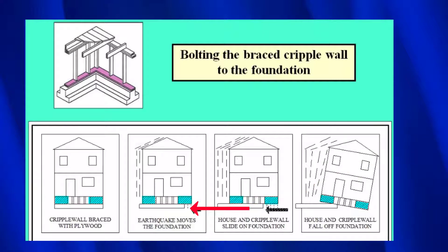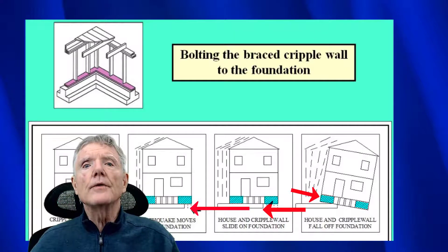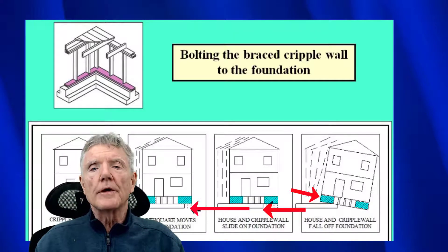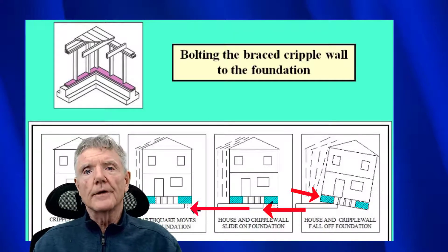Now that we have braced the cripple wall with plywood on each end, when the earthquake force moves underneath the house the house will try to slide off the foundation. As the earthquake continues it'll slide more and more until it falls off. The only way to fix that is to bolt the cripple wall to the foundation.